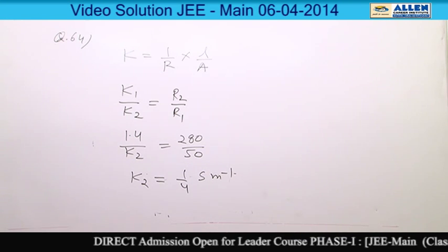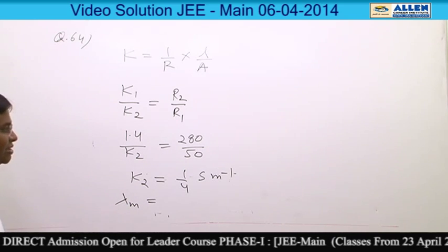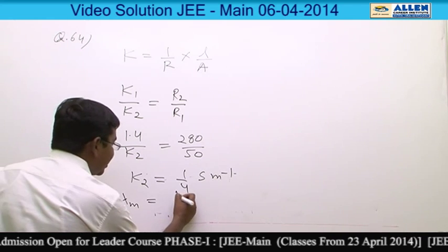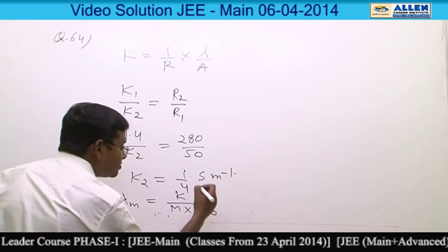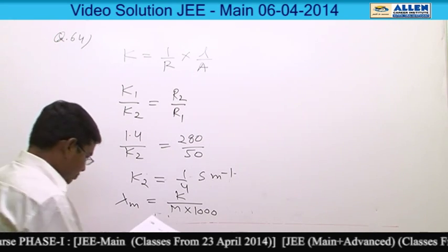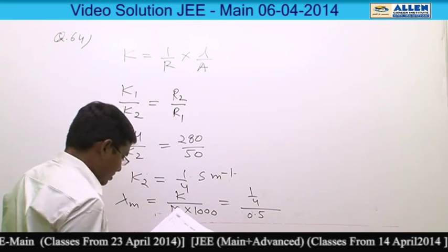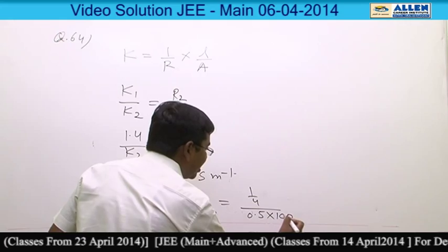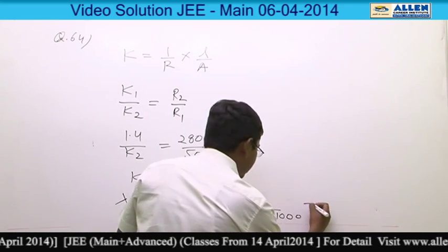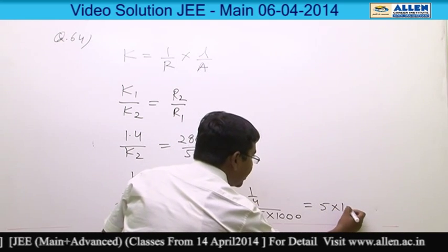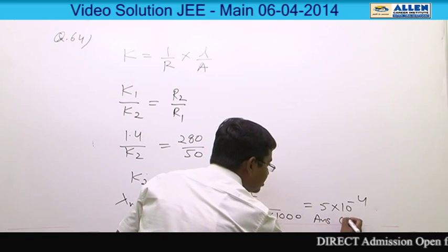The molar conductance lambda m value can be calculated. The lambda m formula when all units are like this is K divided by M into 1000. The data is 1 by 4 divided by molarity 0.5 into 1000. If you solve it, you are getting option number 3, 5 into 10 to the power minus 4.